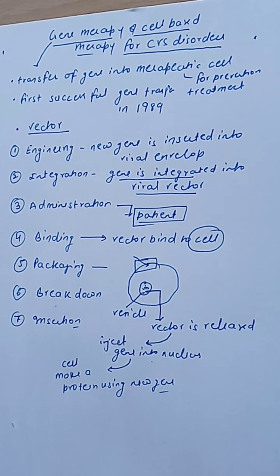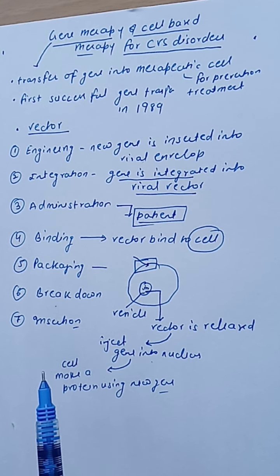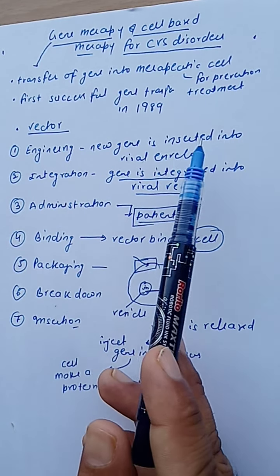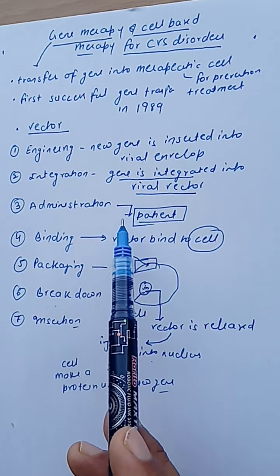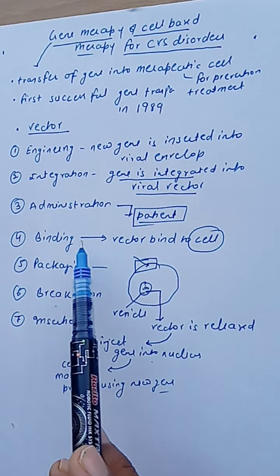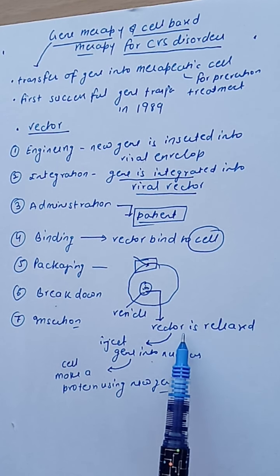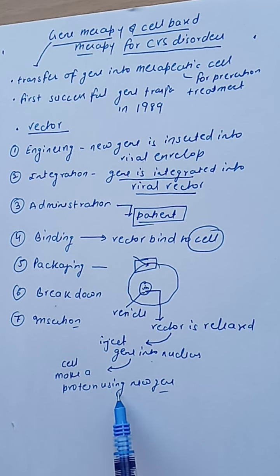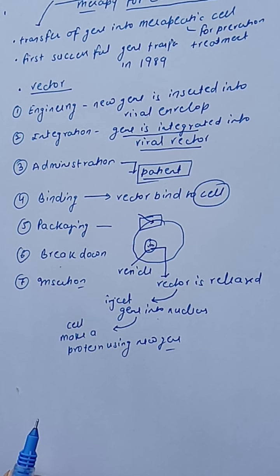To recap: gene therapy is the transfer of a gene into therapeutic cells for the prevention or treatment of disease. The steps are: engineering a new gene into the viral envelope, integration into the viral vector, administration into the patient, binding to target cells, packaging into vesicles, vesicle breakdown, vector release, and finally insertion of the gene into the nucleus so the cell produces a new protein.